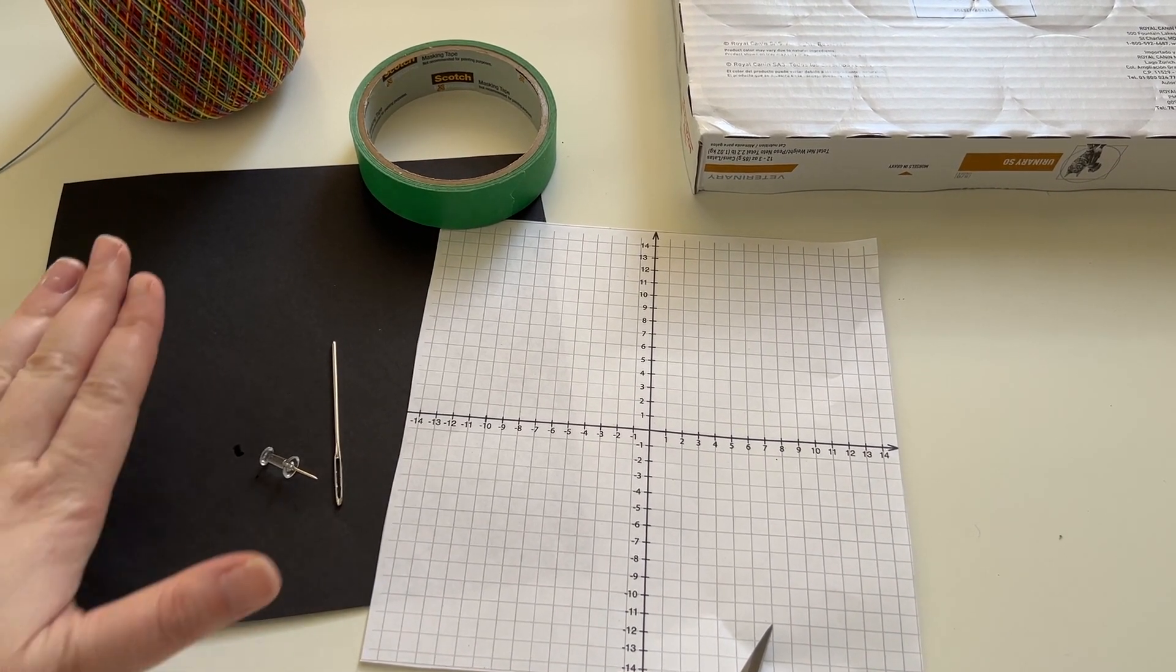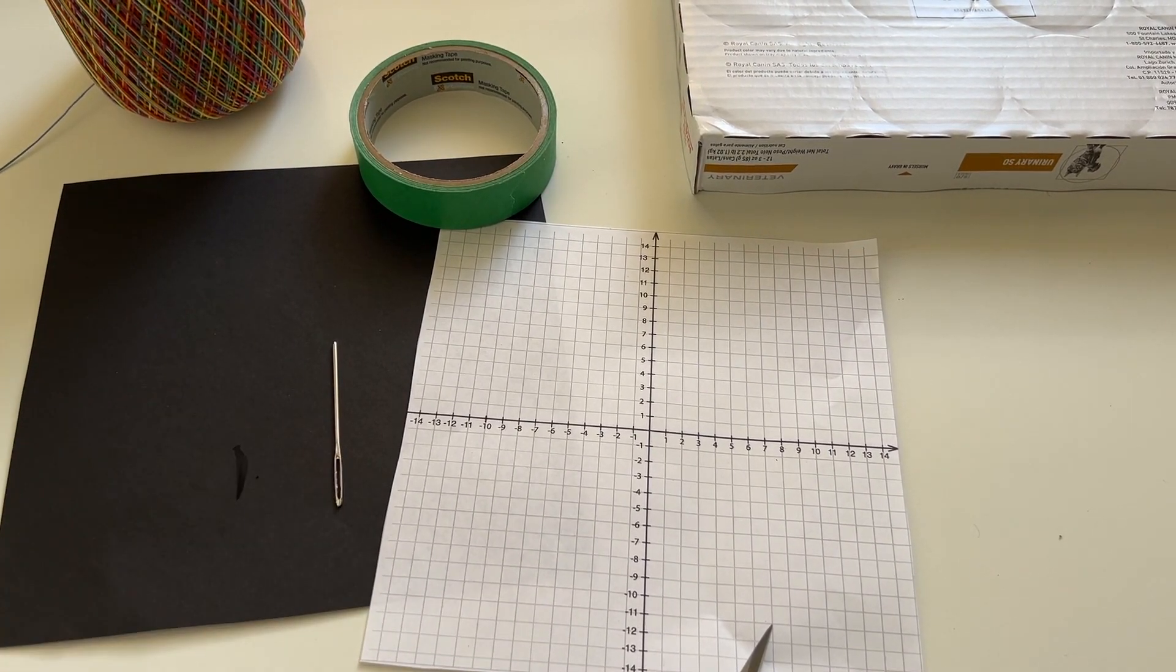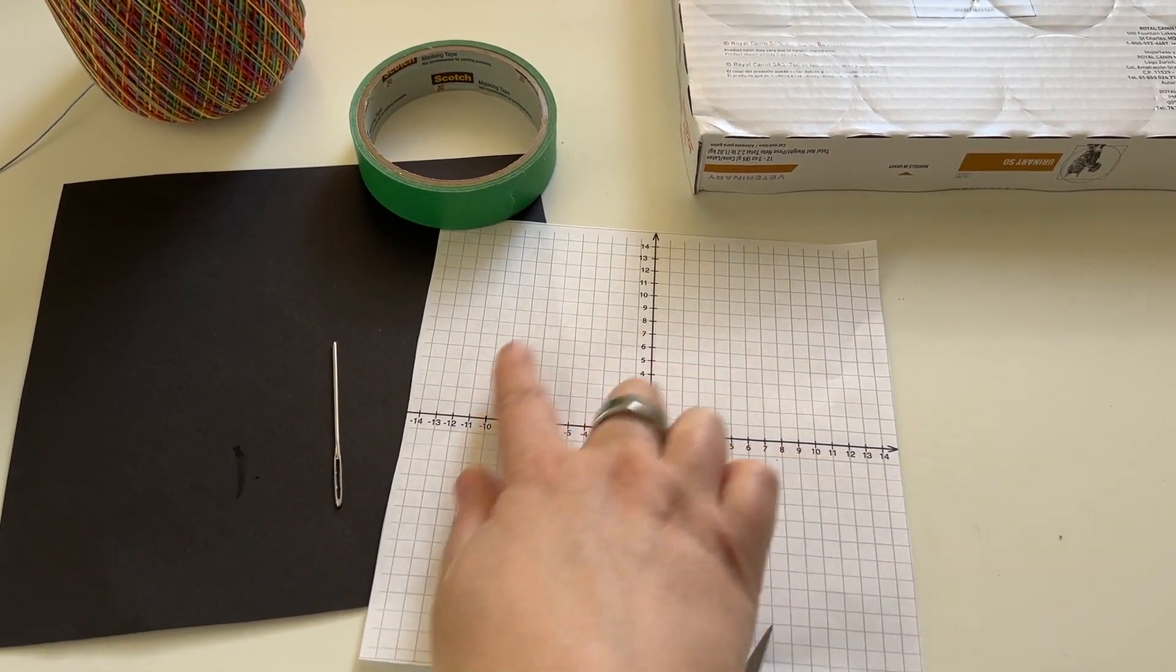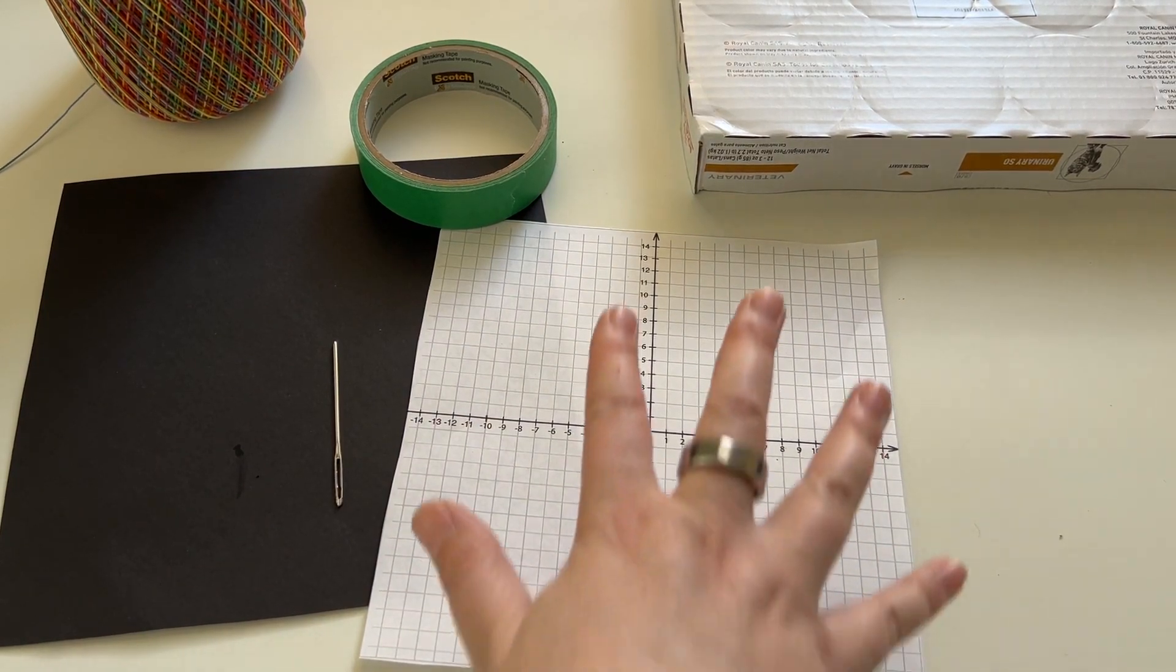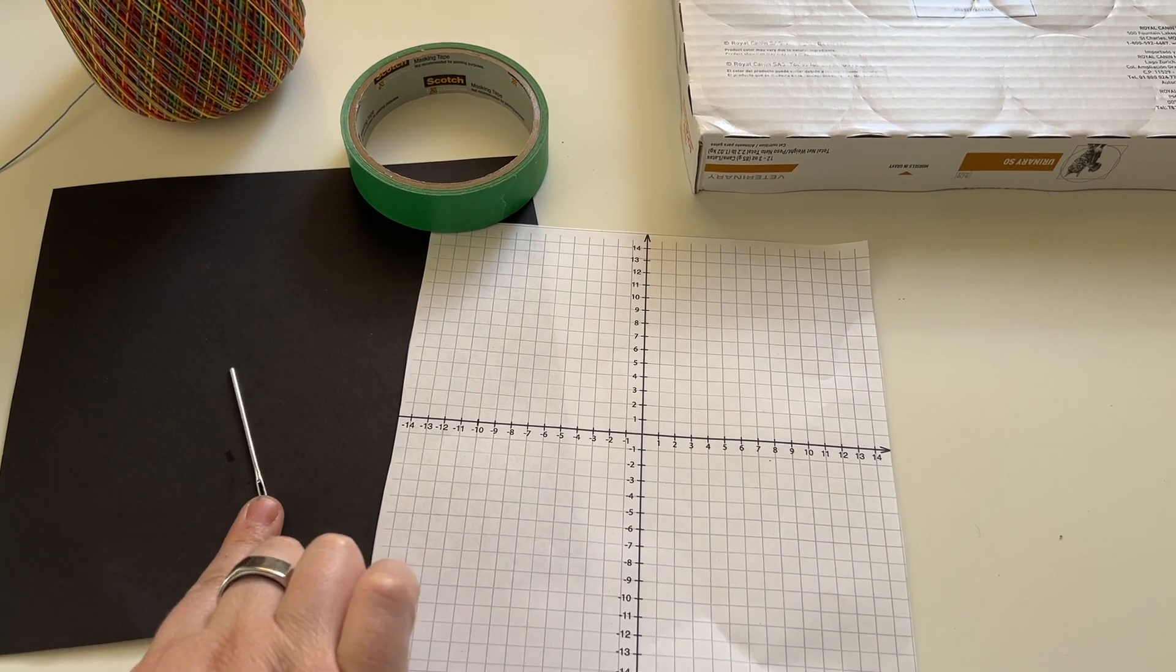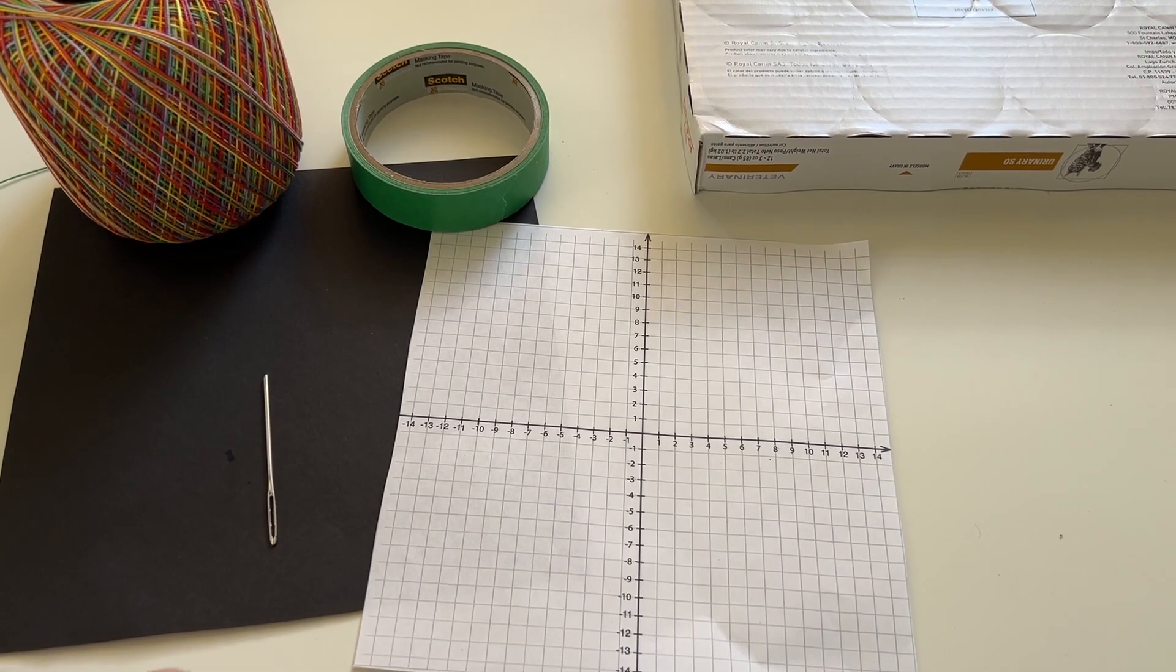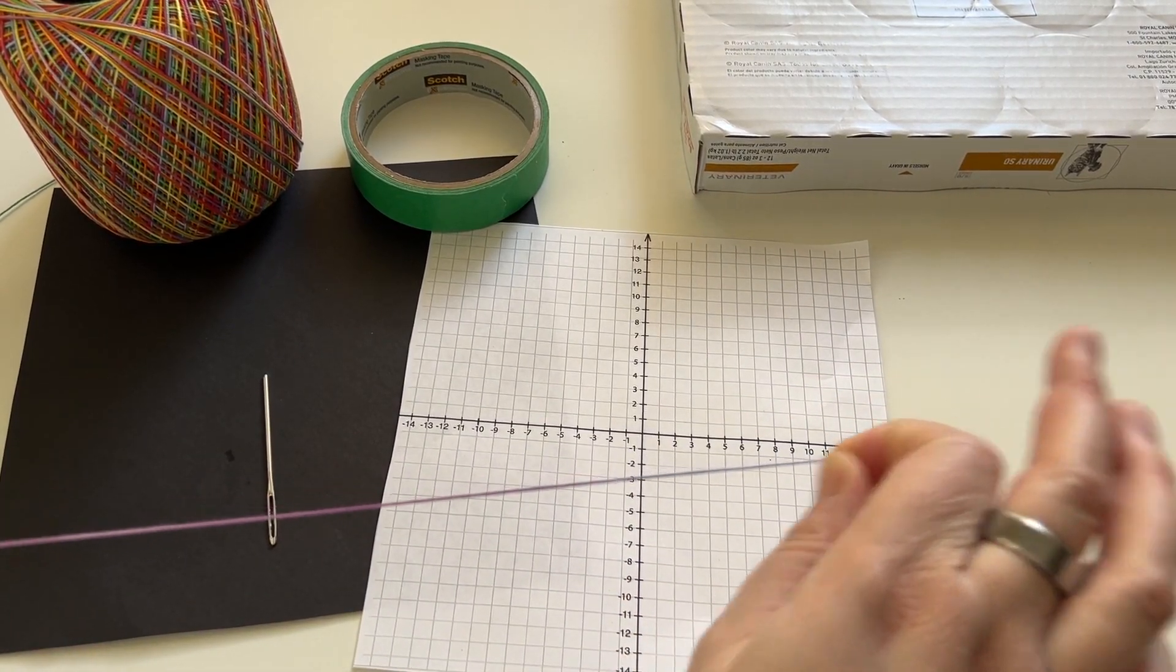Alright, for this project you're going to need an 8x8 piece of black cardstock or construction paper, some graph paper or I have pre-labeled graph paper for you, a size 18 tapestry needle, and some crochet thread about two arms length at a time.